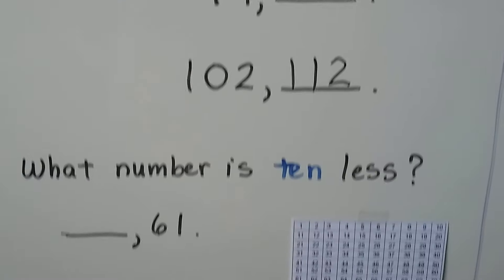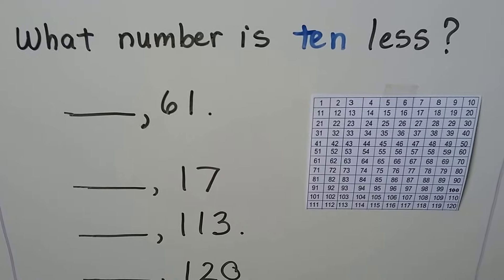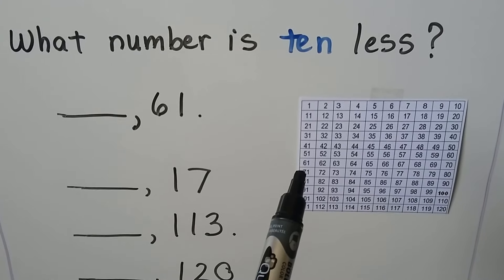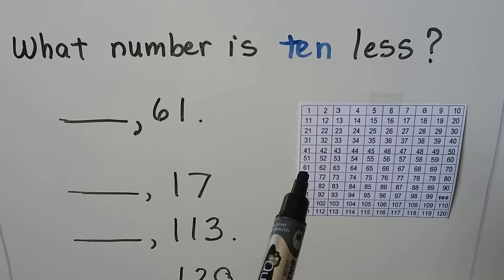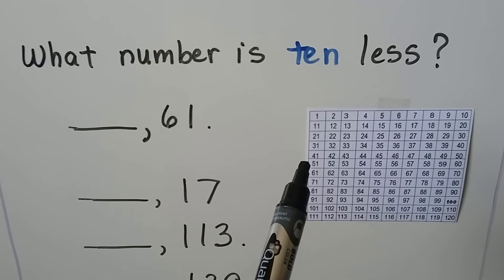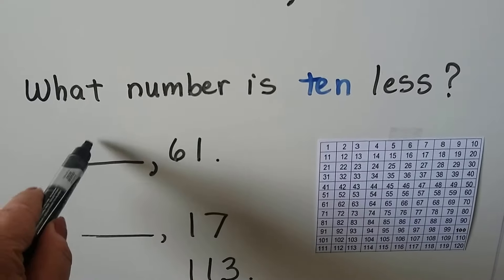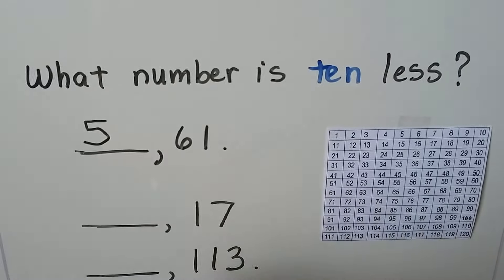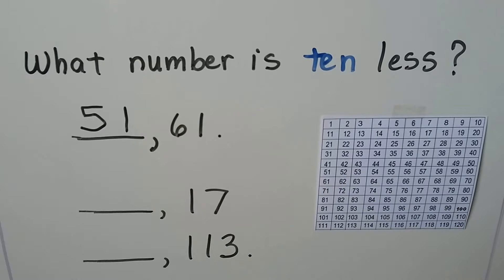What number is 10 less than 61? We find 61 on the chart — there it is. We're going 10 less, so we're going to go up a row to 51. 10 less would be 1 smaller for the tens place, so it would be a 5, and the ones place stays the same.